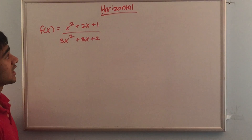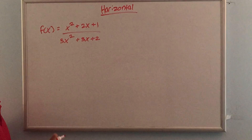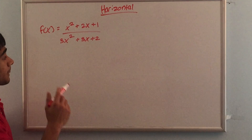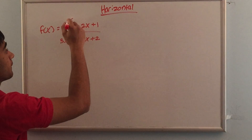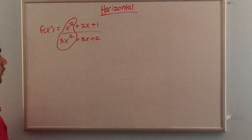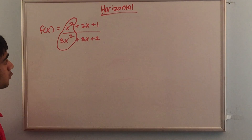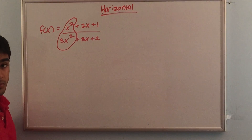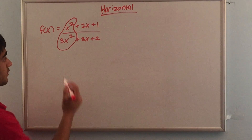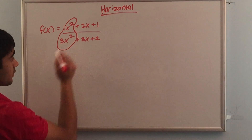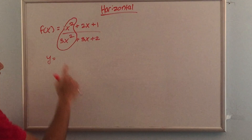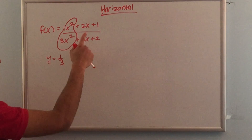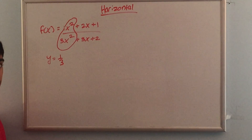Like the vertical asymptote, the horizontal asymptote is pretty easy to calculate. All we need to do is compare the coefficient of the variable with the highest power in the numerator to the coefficient of the variable with the highest power in the denominator. For example, for f(x) = (x² + 2x + 1) / (3x² + 3x + 2), the two highest power variables are x² and 3x². The coefficients are 1 and 3, so the horizontal asymptote is y = 1/3.